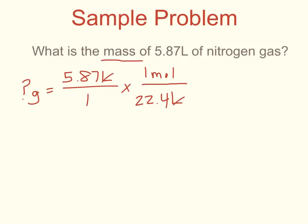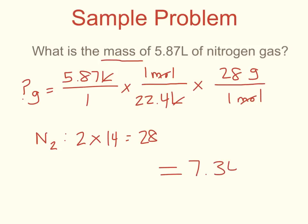Liters cancels, and I'm left with mole. The problem is, I'm not looking for moles, I'm looking for grams. So I need to have another conversion factor. I want mole to cancel, so I'm going to put 1 mole on the bottom. And I'm looking for grams. So that means I need to find the molar mass of nitrogen gas. The tricky part here is remembering that nitrogen is a diatomic molecule. So the formula is N2. That means I'm going to take 2 times the atomic mass of nitrogen, which is 14. 2 times 14 is 28. So I put 28 grams on the top of my fraction. Moles cancel, and now I'm going to solve my problem. 5.87 divided by 22.4 times 28 equals 7.34 grams of nitrogen gas.